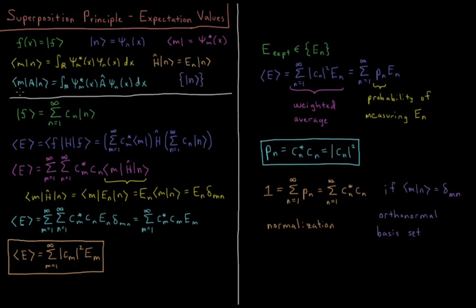We have the expectation value integral: m-a-n is the integral over all real numbers of psi_m star with operator a acting on psi_n. Our Hamiltonian, or Schrödinger equation, can be represented as follows: the Hamiltonian operator acting on psi_n gives us the energy of that wave function times that eigenfunction psi_n again. There is a set of eigenfunctions psi_n which we can use to constitute any function f(x).